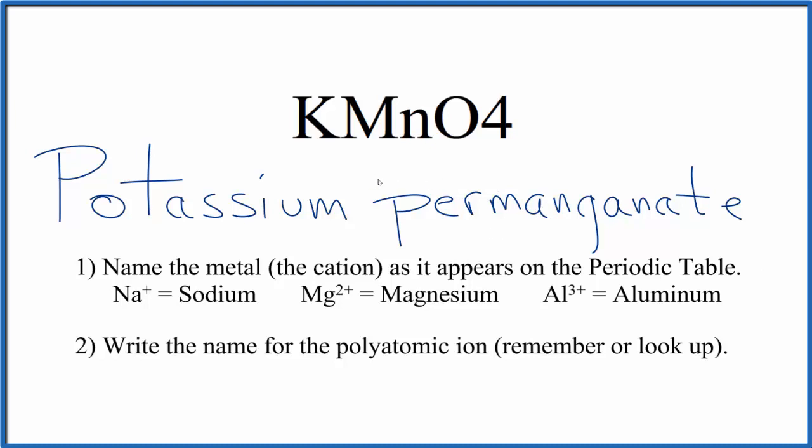If you were given the name and asked to write the formula for potassium permanganate, you'd need to realize that potassium is one plus. It's in group one on the periodic table. And this permanganate ion, MnO4, is one minus. So because of that, we need one potassium and one permanganate ion, KMnO4.